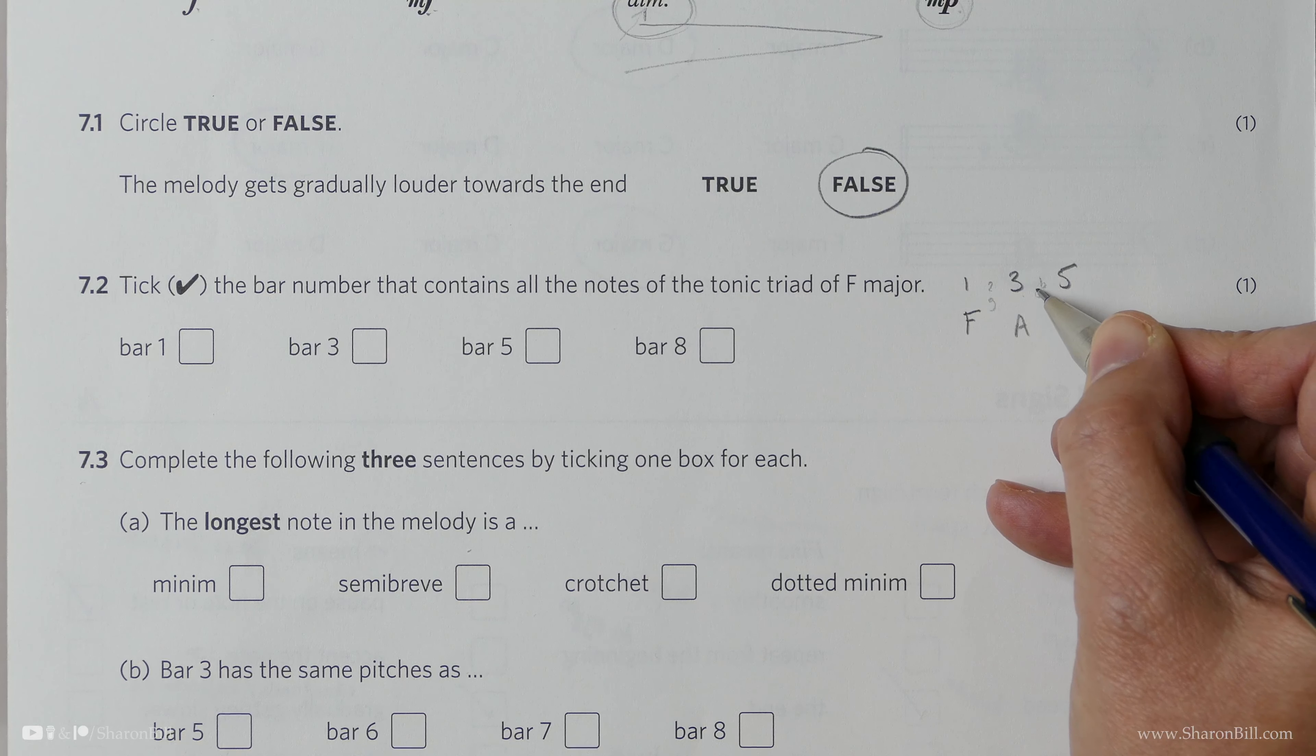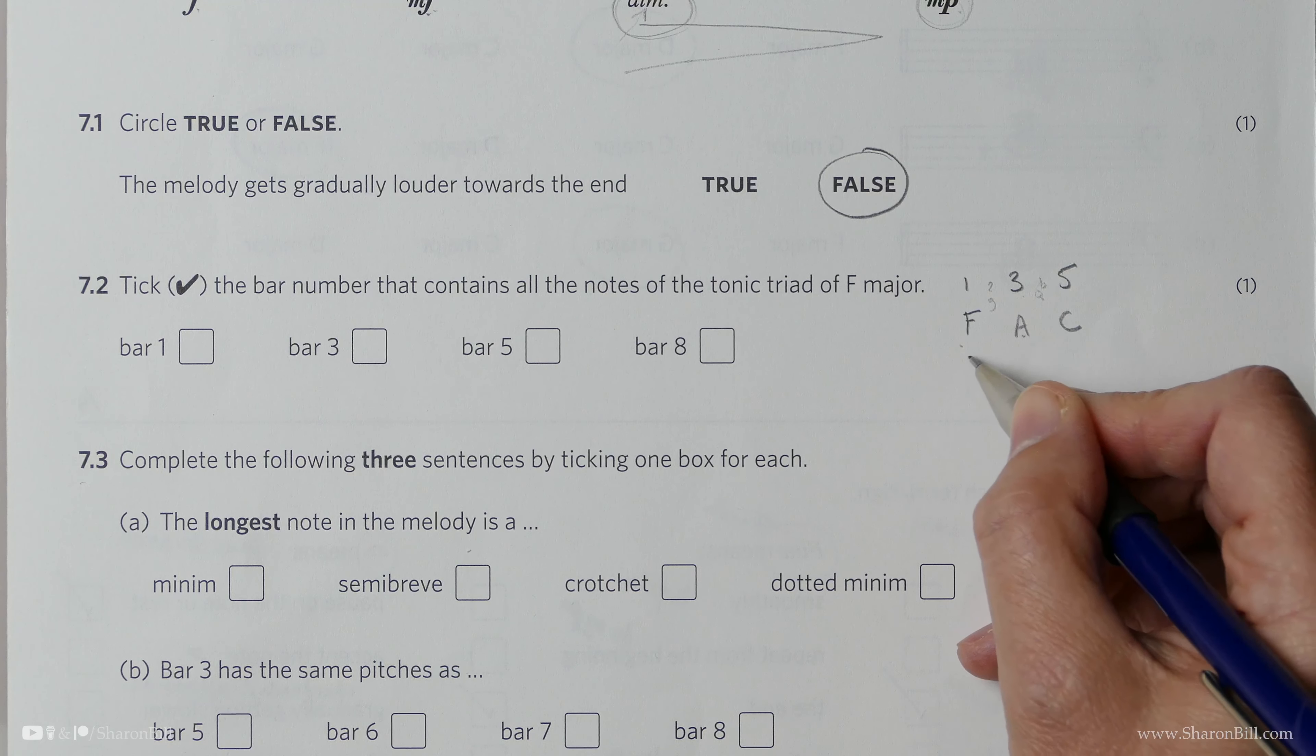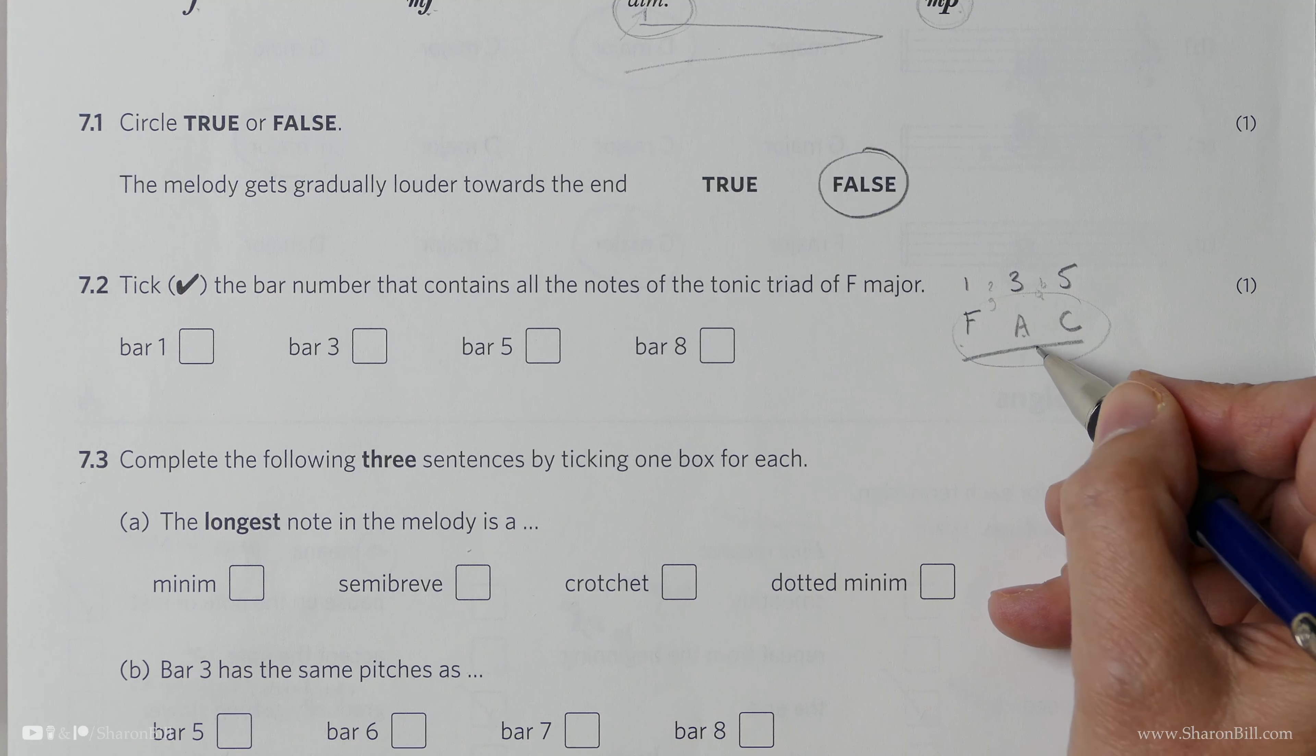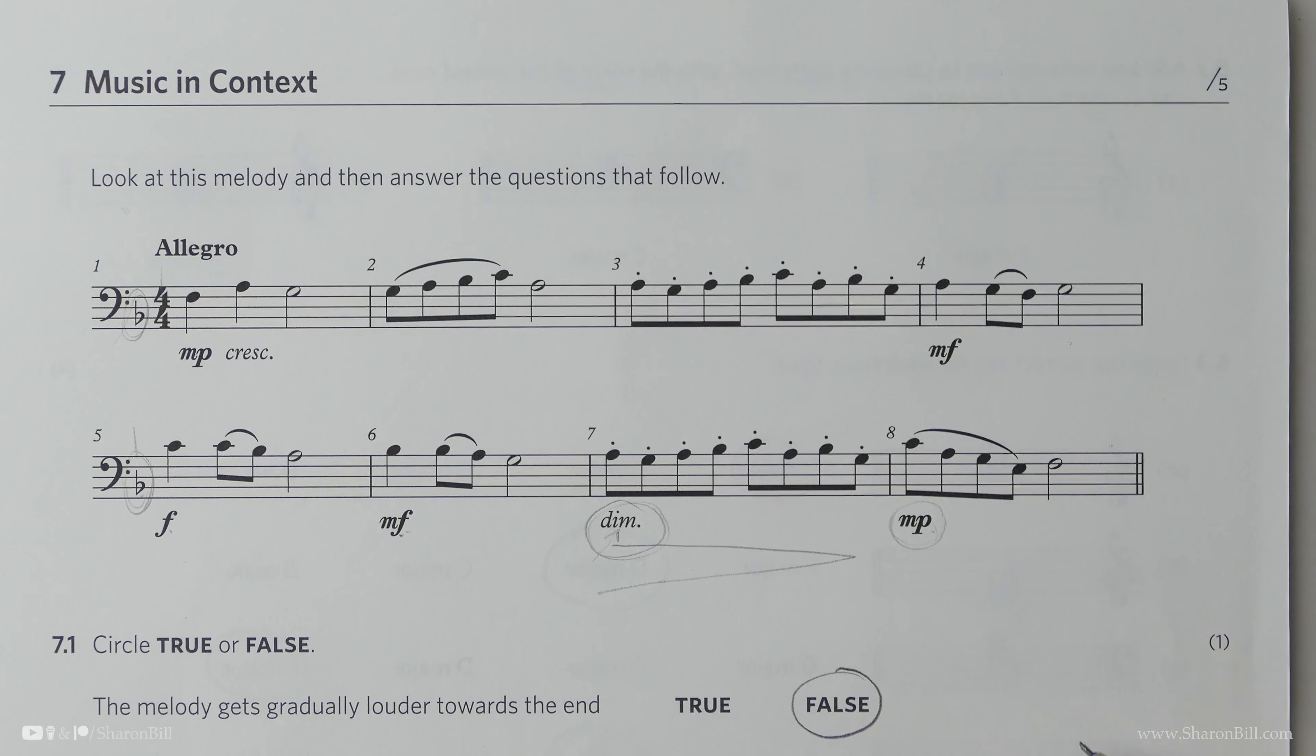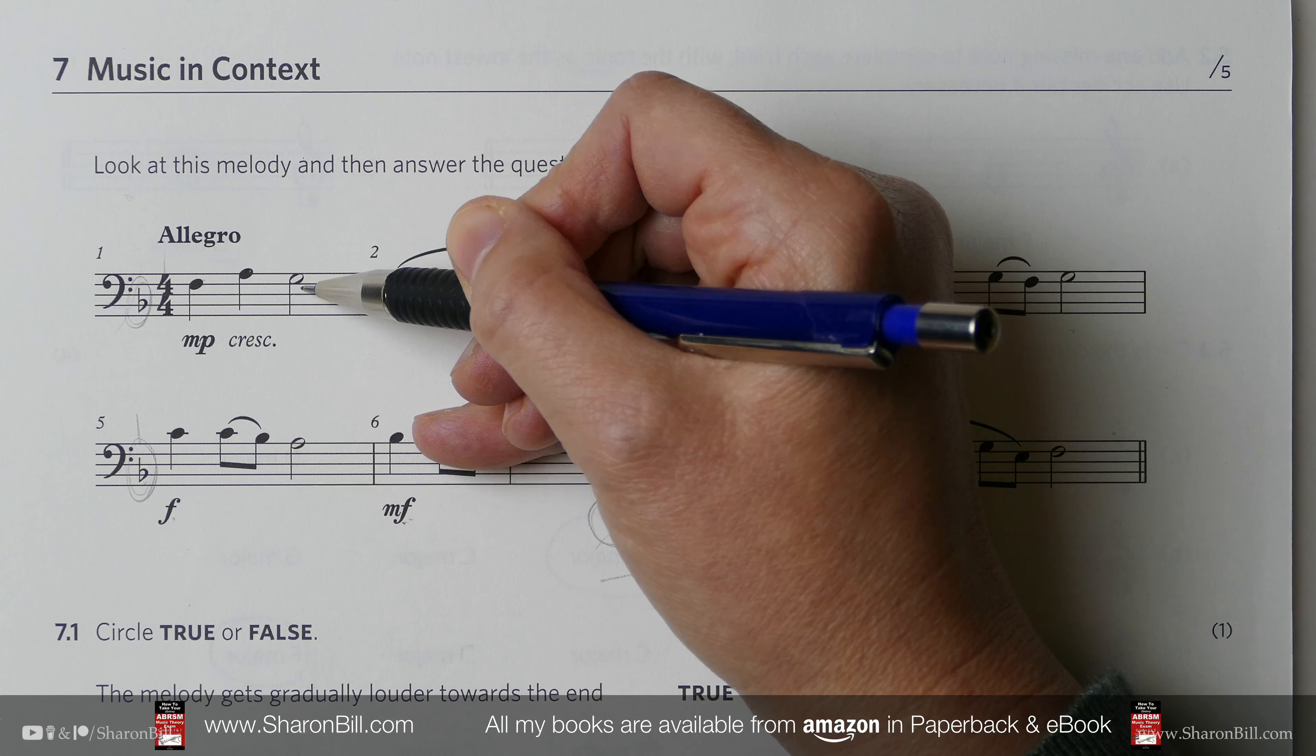B flat, of course, because of the key signature, is 4, and then C is 5. F, A, C. So we're looking for a bar that has all of those notes, not necessarily in that order. So let's just start scanning through. So we have, basically F, good boys do football, F, A, but no C.